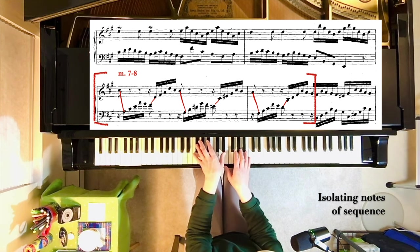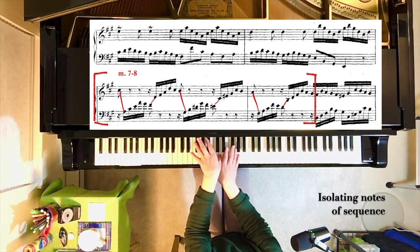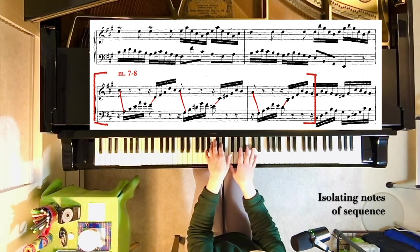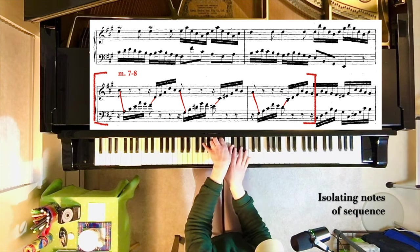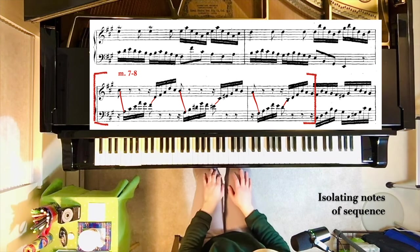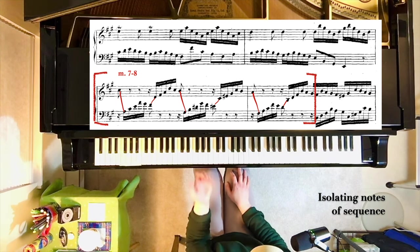And then we're in measure eight. A in the right hand, F sharp in the left. And finally, B in the right hand, and D in the left. So this is those isolated notes from the sequence measure seven and eight. That's all these are thirds, very warm intervals.